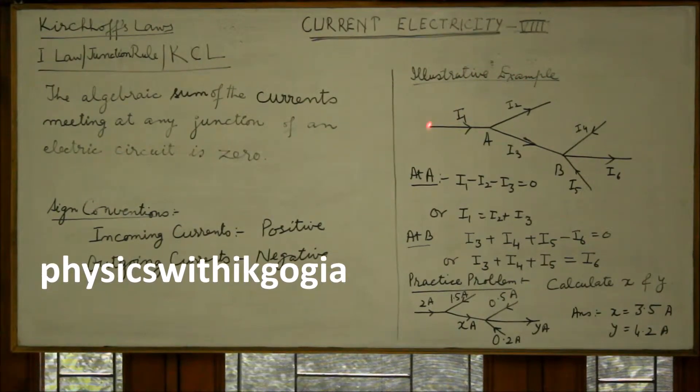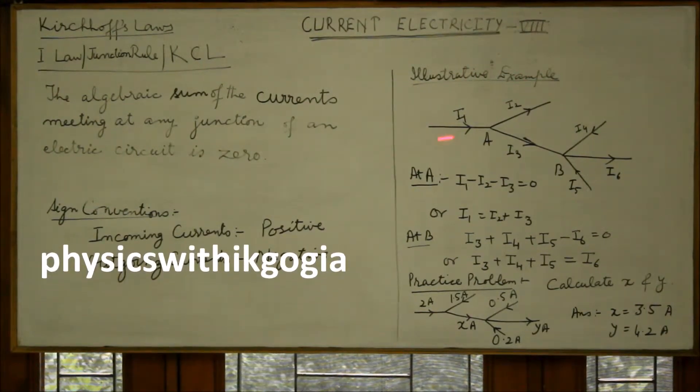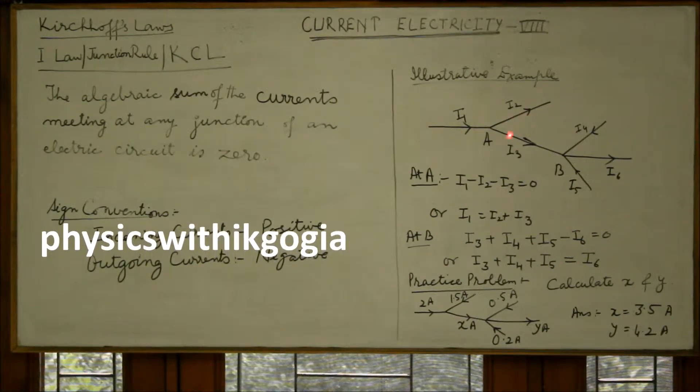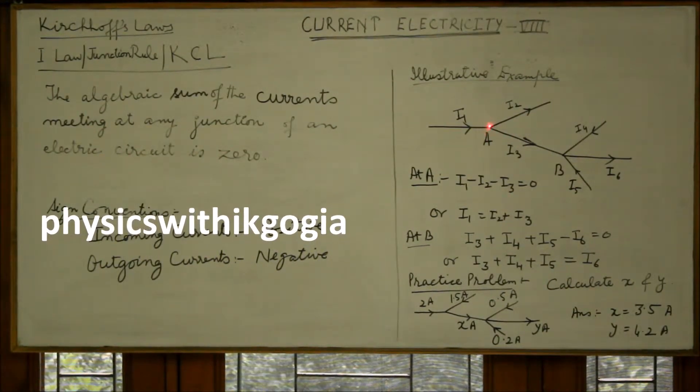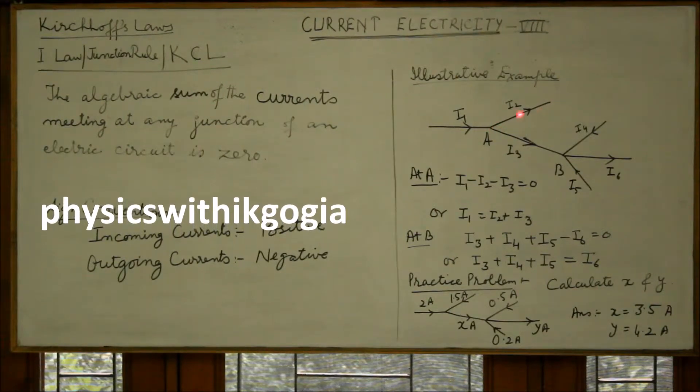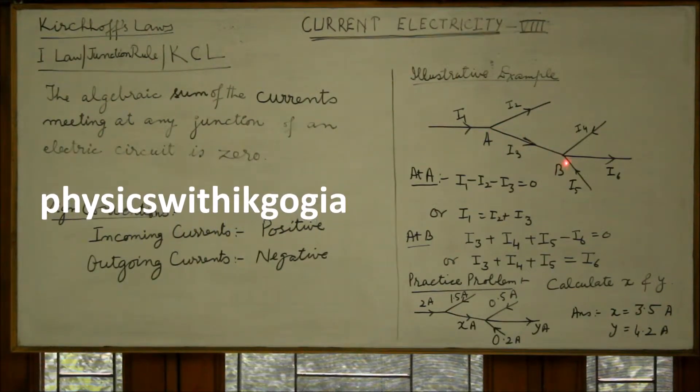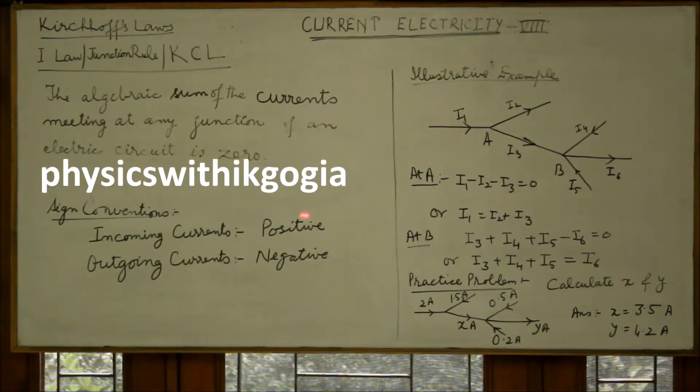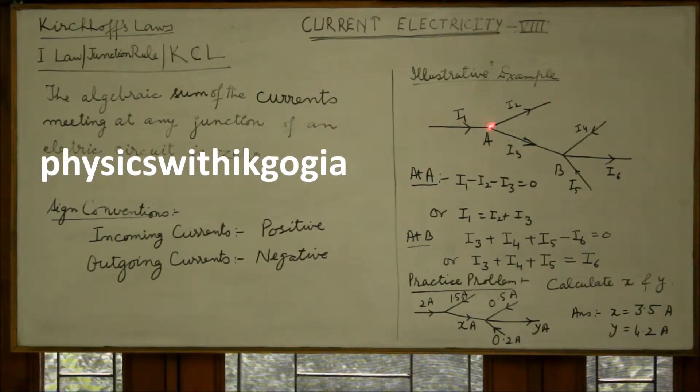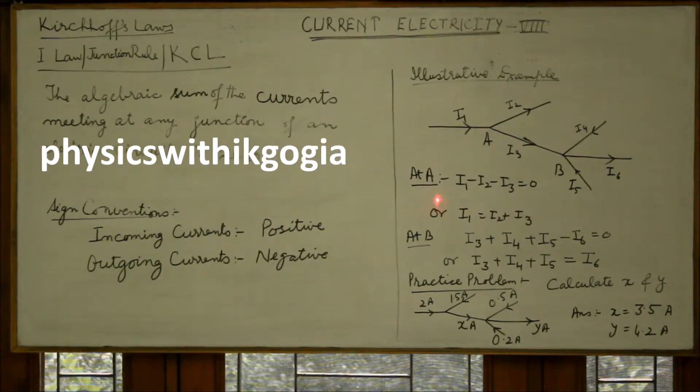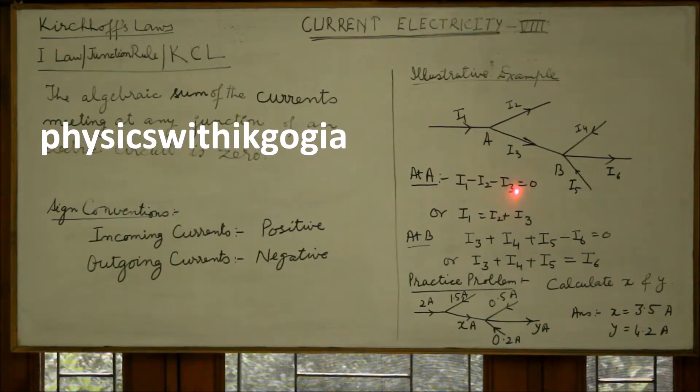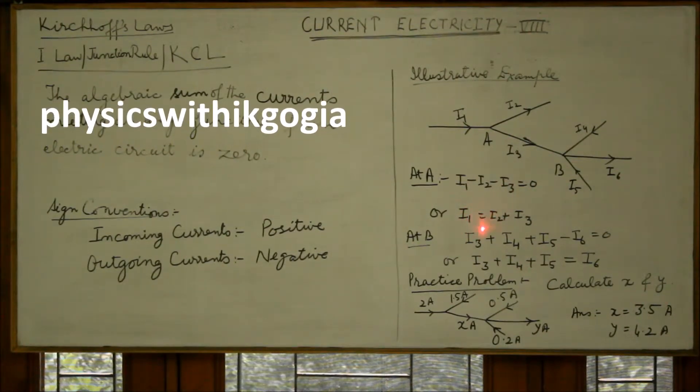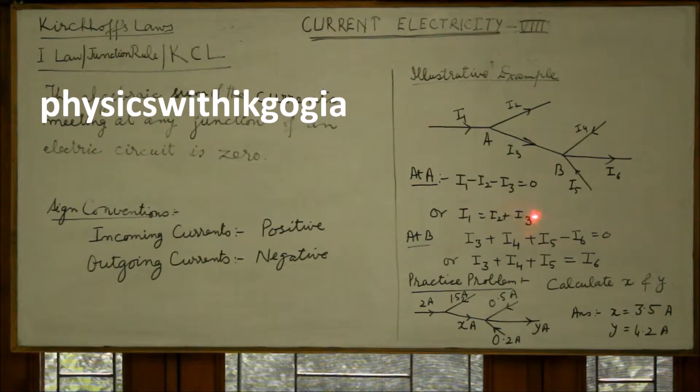For illustrating the use of the law, let's take this part of our circuit. At junction A, I1 is incoming current, I2 is outgoing current, I3 is outgoing current. So I1 will be taken as positive, I2 and I3 negative according to these sign conventions. At A, the equation becomes I1 minus I2 minus I3 equal to zero, or incoming current equal to outgoing current.